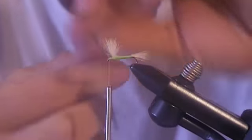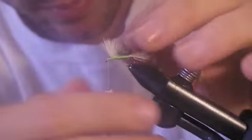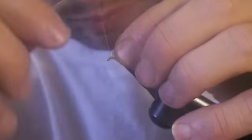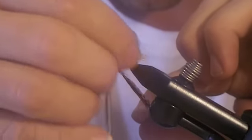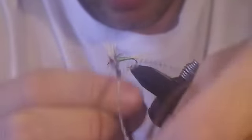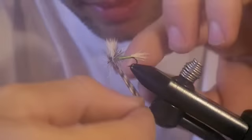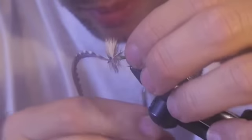Now we need to wrap both of these at the same time. We're going to grab them and wrap both of these together. Grab hold of both of them. Make a couple wraps in front of the wing. Then we want a couple wraps behind the wing. And then one more in front of the wing. Now we have to tie it off.